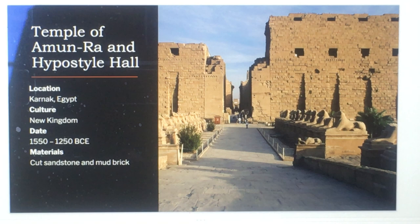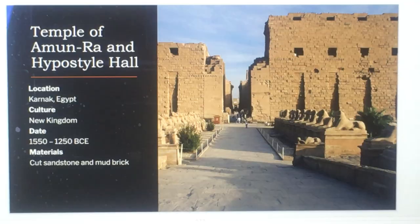Here's the Temple of Amun-Ra and the Hypostyle Hall. This is in Karnak, Egypt, New Kingdom, 1550 to 1250 BCE, and the materials are cut sandstone and mud brick.